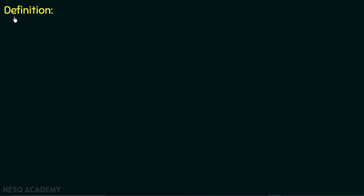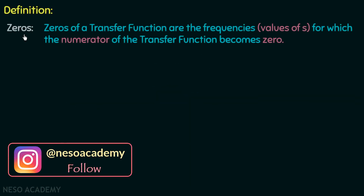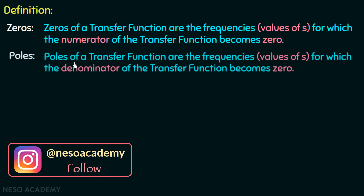We will first see the definition of zeros and poles. Zeros of a transfer function are the frequencies — that is, the values of s — for which the numerator of the transfer function becomes zero. And poles of a transfer function are the frequencies — that is, the values of s — for which the denominator of the transfer function becomes zero.